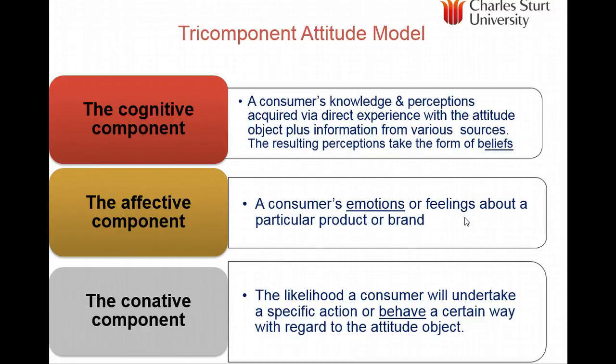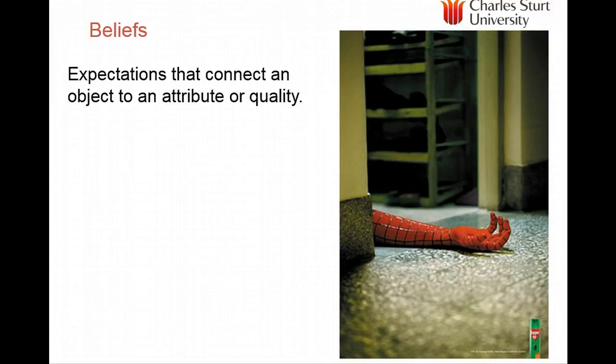The cognitive component is often what we call thinking, knowledge, and perceptions — usually acquired by direct experience plus advertising. Affect is the consumer's emotions or feelings about a particular product or brand, not to be underestimated. The conative component is the likelihood that a consumer will behave in a certain way. Remember, attitudes don't really predict behaviour but predict an intention to behave in a particular way. Attitudes are also collections of beliefs.